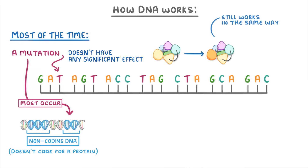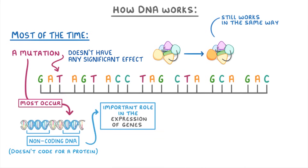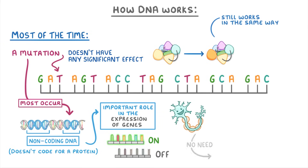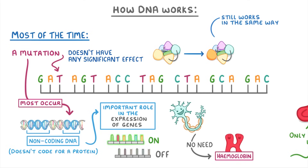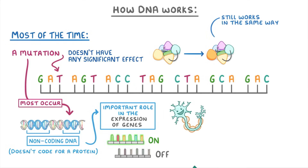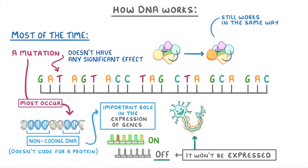Some non-coding DNA does play an important role in the expression of genes — whether those genes are turned on or off. For example, in a nerve cell there's no need to produce hemoglobin, because hemoglobin is only needed by red blood cells. So in the nerve cell the gene for hemoglobin will be switched off, which is the same thing as saying that it won't be expressed.